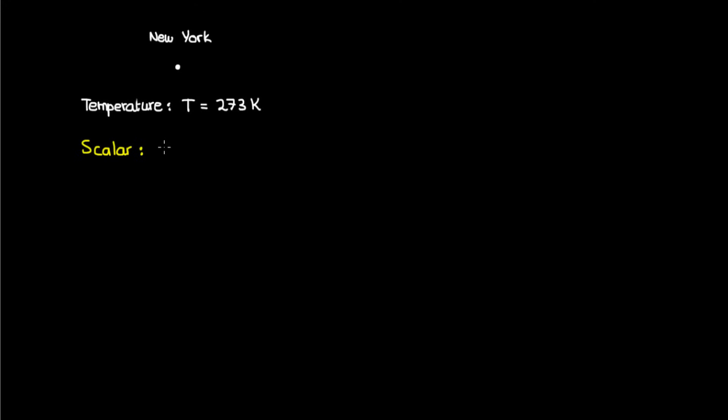So to specify the temperature in New York, I just need this single number, this single component to specify the temperature. Of course, there are no basis vectors involved in specifying this component, because it's just the magnitude. Temperature doesn't really have a direction. As a result, one could say that there are 0 basis vectors for this 1 component, or 0 basis vectors per component.